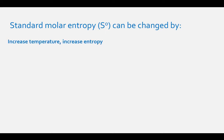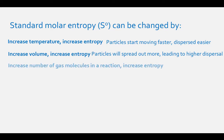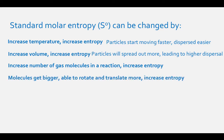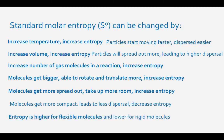When temperature and volume of a reaction increase, so does standard molar entropy. If you increase the temperature of a substance, the particles will start moving faster and can be dispersed more easily, leading to higher entropy. If you increase the volume of a reaction mixture that contains gases, the molecules will spread out, leading to more dispersion and higher entropy. If you increase the number of gas molecules made in a reaction, entropy also increases because entropy increases as the dispersal of gas particles increases. Entropy also increases as molecules get bigger, because they can rotate and translate more, and as molecules get more spread out rather than more compact. Entropy is also higher for molecules that are more flexible rather than more rigid.